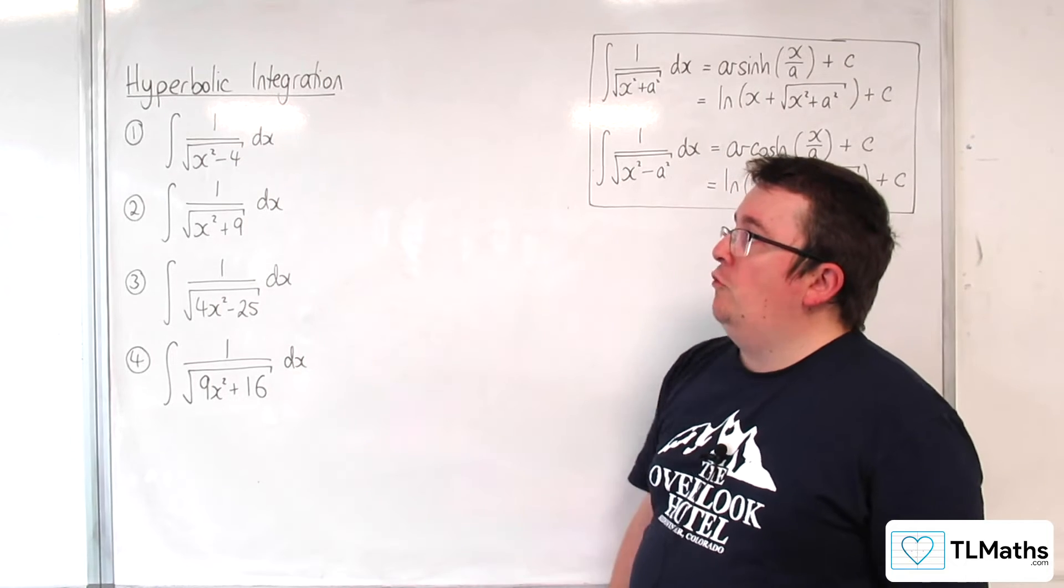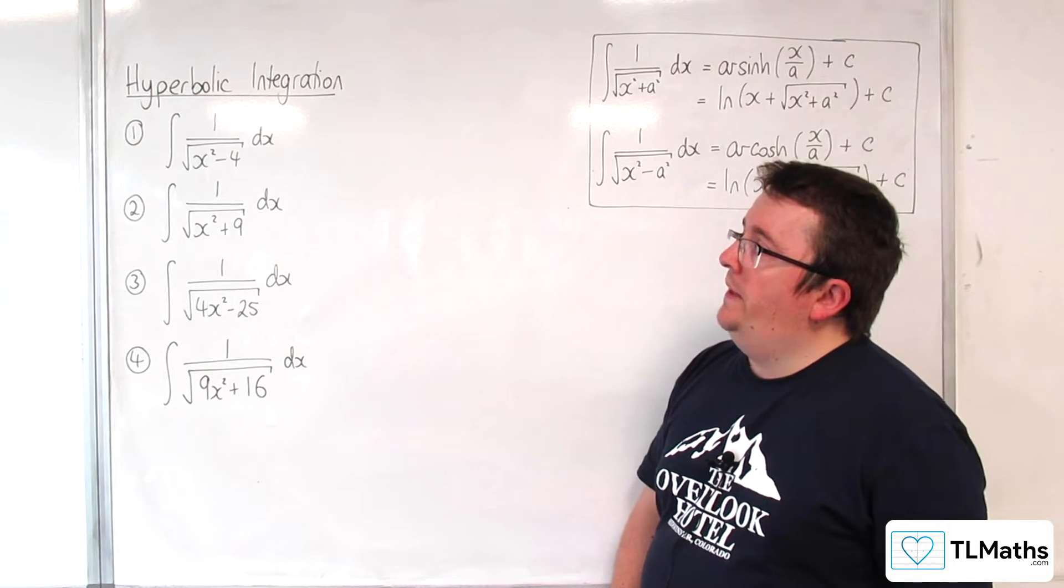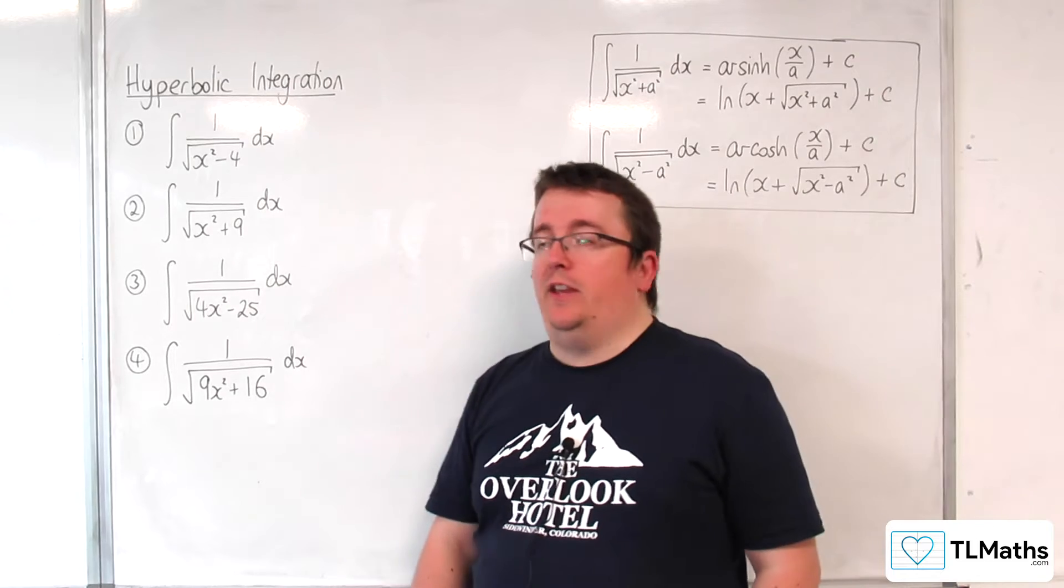In this video we're going to be integrating these four examples. So for the first one, the integral of 1 over the square root of x squared take away 4.